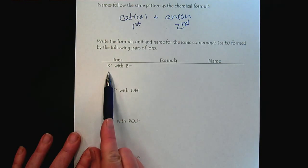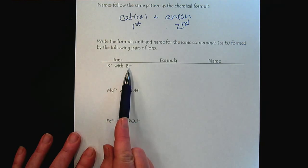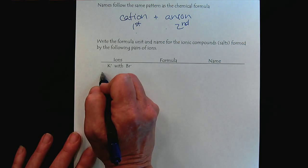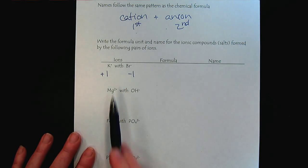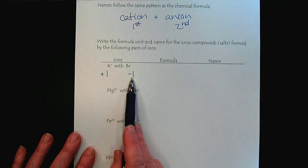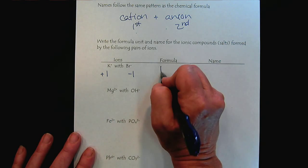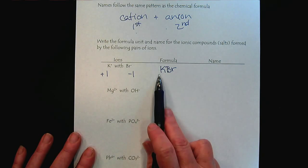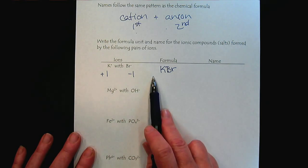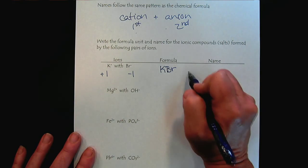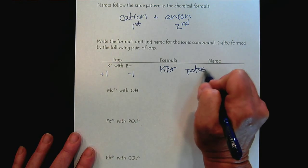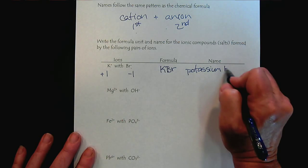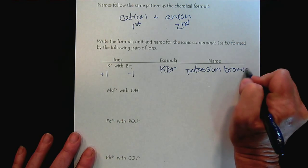With our first example, we have potassium and bromide. This is a very straightforward example because we have plus 1 and minus 1. So, we already are creating a neutral compound with a 1 to 1 ratio. So, we list our cation first and our anion second. And the name of this cation is potassium. And the name of this anion is bromide.